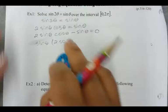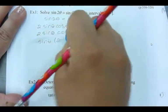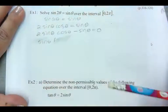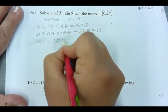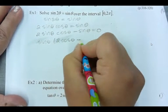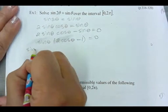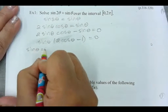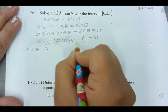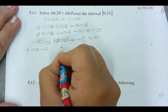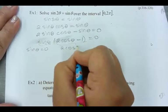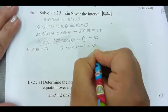Sine theta can be factored out, and you're going to get one of your solutions from there. So 2 cos theta minus 1. Now we set each factor to zero. So sine theta equals zero. And then we set this factor equal to zero. So 2 cos theta minus 1 is equal to zero.